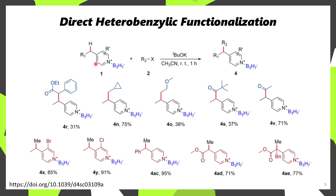If you have a substituent in the 4-position which possesses a proton, it's possible to form that exocyclic alkene, which can then be alkylated by an alkylating agent. In this example, you can see that a number of alkyl halides underwent substitution by this pyridine derivative, and it's even possible to acylate this position using acyl halides. They also demonstrated that a wide range of different pyridines could be used, possessing functional groups such as a bromide, a chloride, or even ester groups.